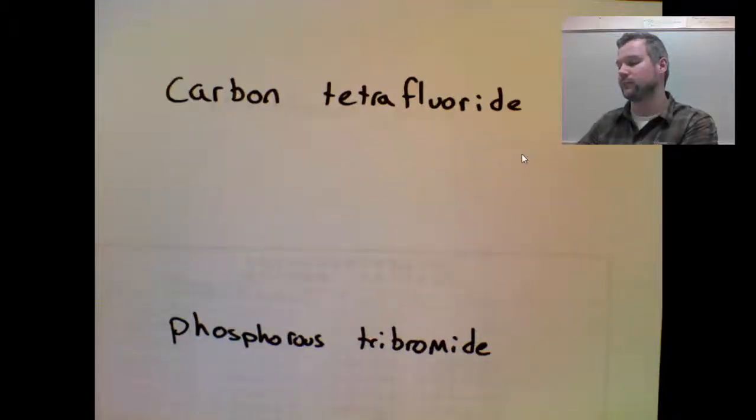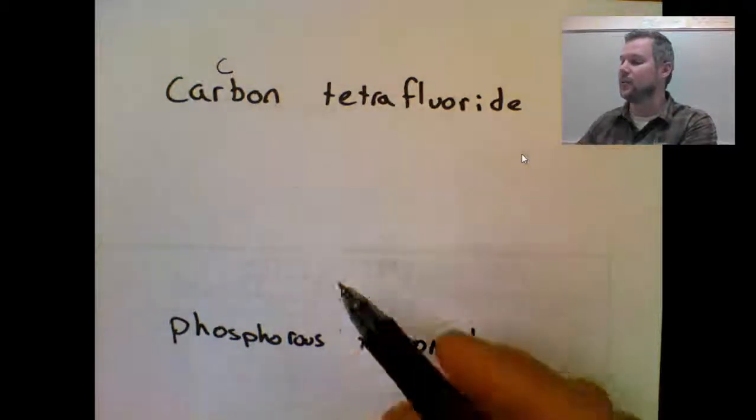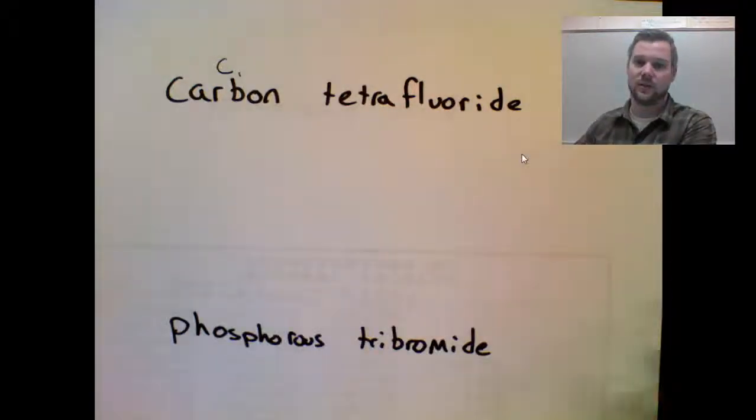So on these, you want to write down the symbol again, just like we did for the ionic. And since there's no prefix, my subscript is going to be one, which I won't need to use.